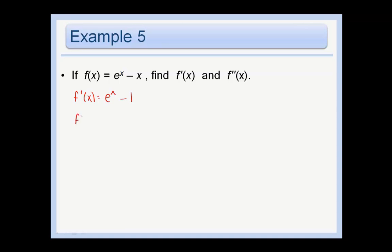If we take the derivative once more, we now just look at our f prime function and we take the derivative once more. That's how you find f double prime. So the derivative of e to the x is just e to the x and the derivative of 1 is 0. So our answer is just e to the x.